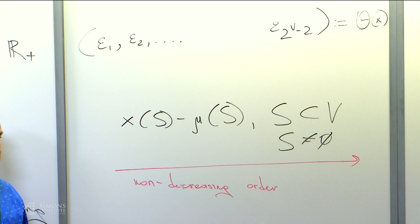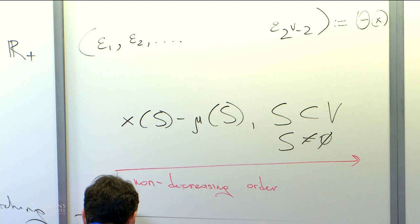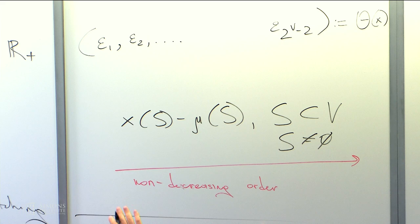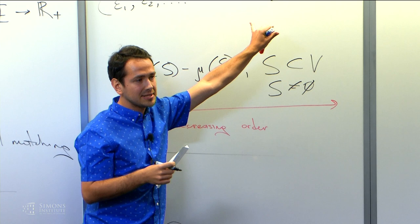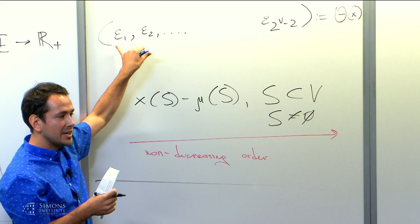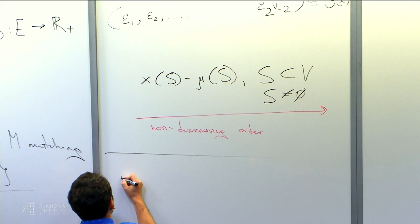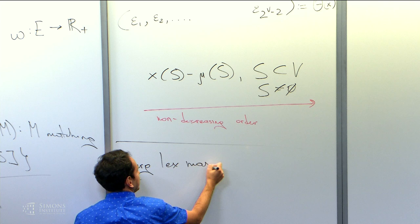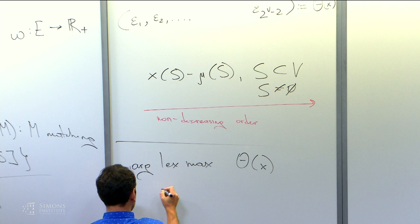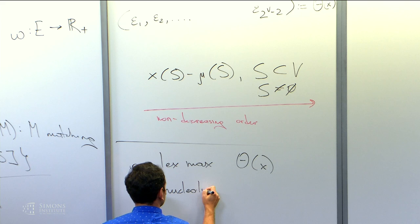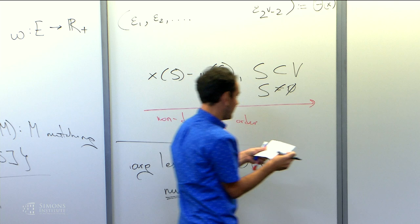Now I will define what the Nucleolus is. The Nucleolus is the allocation which gives us the lexicographically maximal excess vector Epsilon. We would like to make our unhappiest coalition as happy as possible; subject to that, make the second unhappiest coalition as happy as possible; subject to that, make the third unhappiest coalition as happy as possible. So the Nucleolus is the argmax of the lexicographical maximum of theta of x.